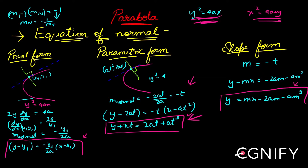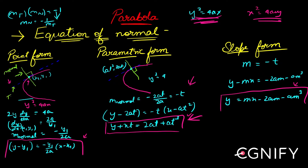At a point (x₁, y₁), if I draw this blue tangent, the line which is perpendicular to that tangent and passing through (x₁, y₁) is the normal. So this green line is your normal, and the blue line is your tangent. My parabola is y² = 4ax.